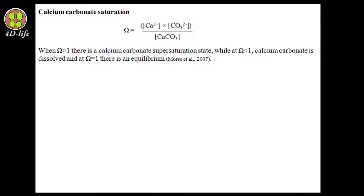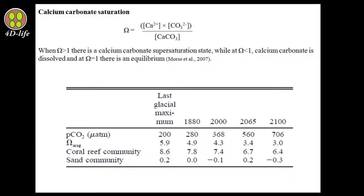The aragonite saturation state of tropical surface seawater has decreased from 4.5 in pre-industrial times to almost 3.8 nowadays. In this table, you can see the amount of CO₂ and aragonite saturation state from the last glacial period until approximately the next 85 years. As you can see, the changes are remarkable.